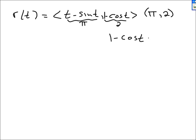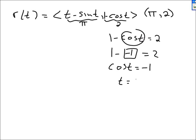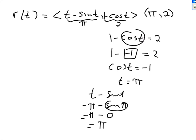Looking at the y component: 1 minus cosine t should equal 2, so cosine of t should be negative 1. That happens when t is π. Checking the x component: t minus sine of t, where t is π — sine of π is 0, so we get back π, which is what we want. This implies t is π.